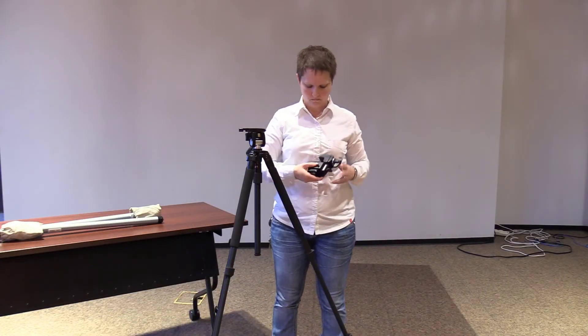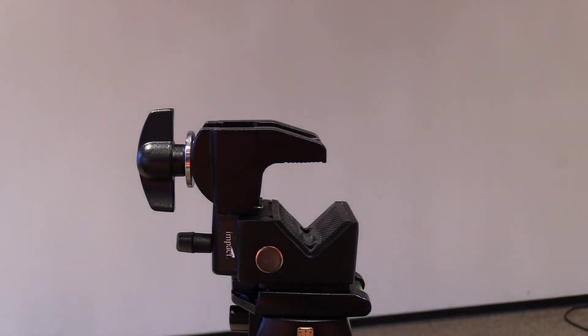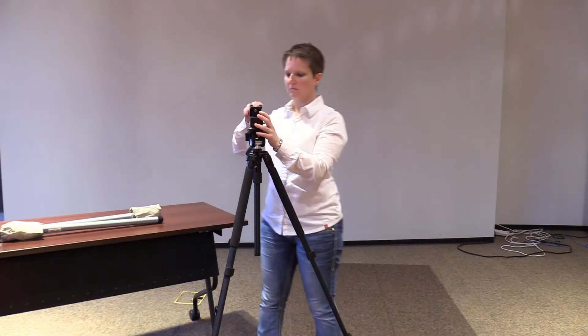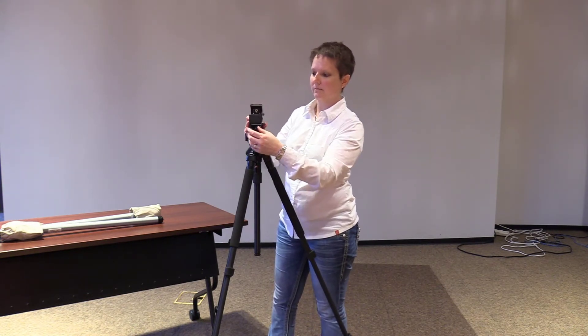Once tightened, the super clamp is then placed onto the top of the tripod. Open the super clamp by rotating the handle on the back side of the clamp.